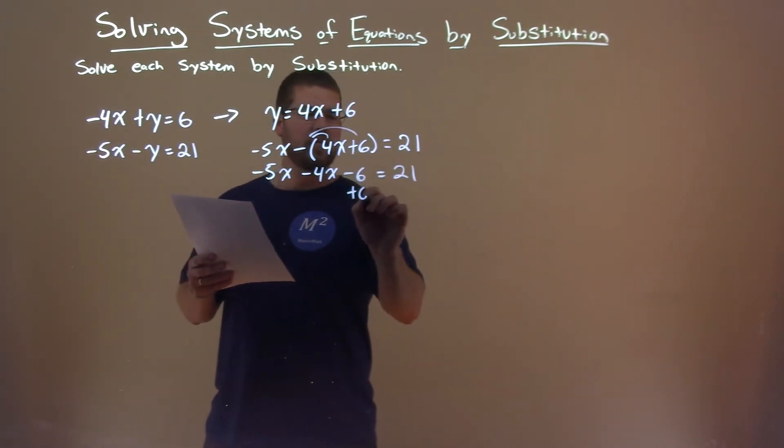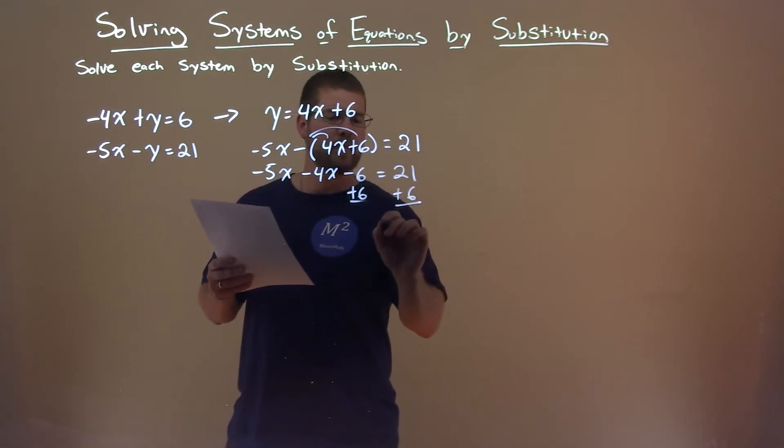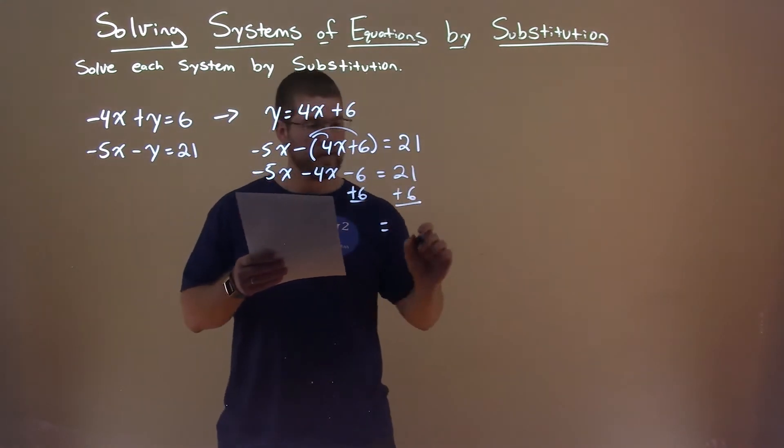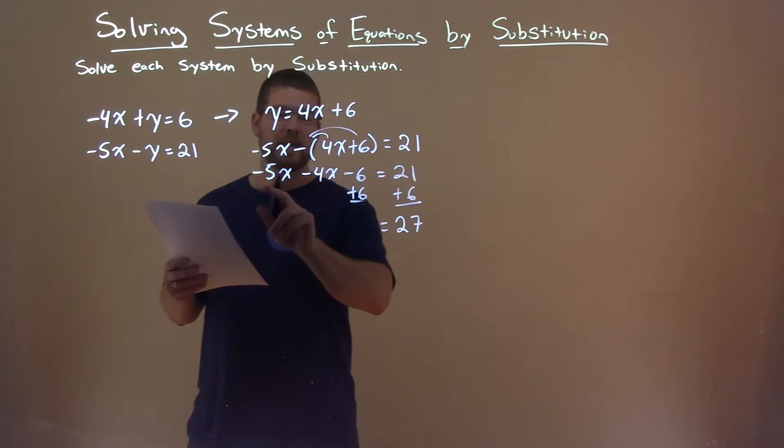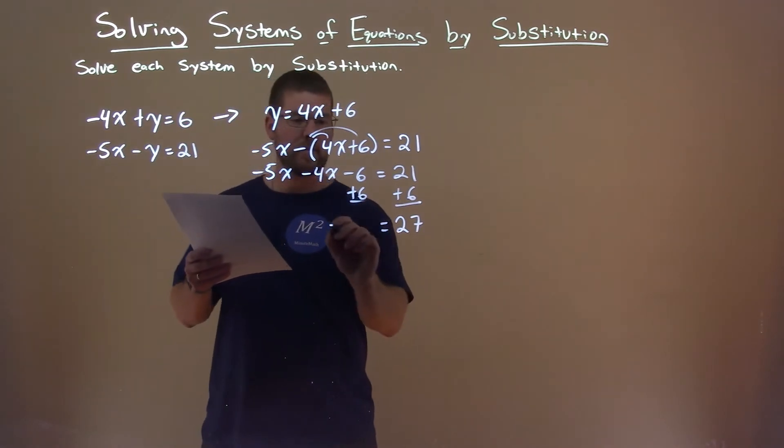We add 6 to both sides here. On the right-hand side, 21 plus 6 is 27. Negative 5x minus 4x is minus 9x.